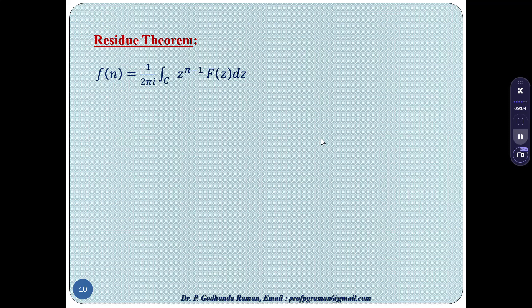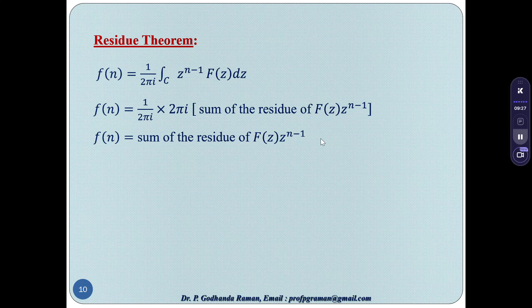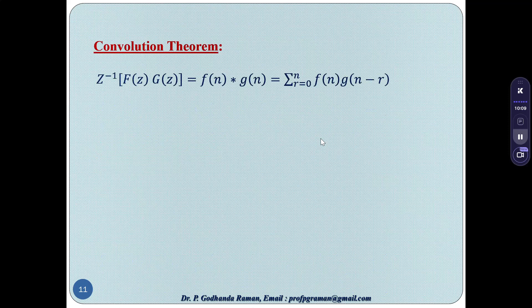Residue theorem: f(n) = (1/2πi)·∮ z^(n−1)·F(z) dz. Using Cauchy's integral formula, the contour integral equals 2πi times the sum of residues of F(z)·z^(n−1). So f(n) = sum of residues of F(z)·z^(n−1). For a simple pole: residue = lim(z→a) (z−a)·F(z)·z^(n−1). For a pole of order m: residue = lim(z→a) [1/(m−1)!]·d^(m−1)/dz^(m−1)[(z−a)^m·F(z)·z^(n−1)].